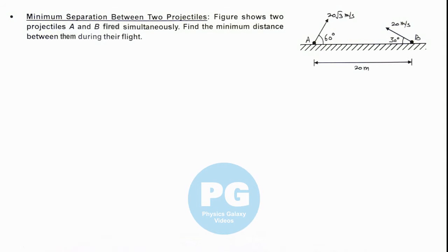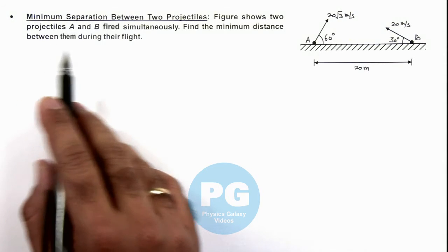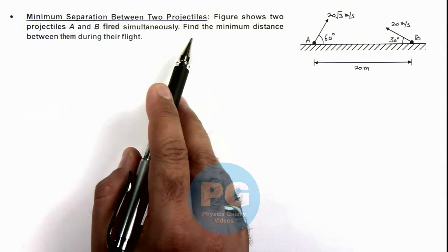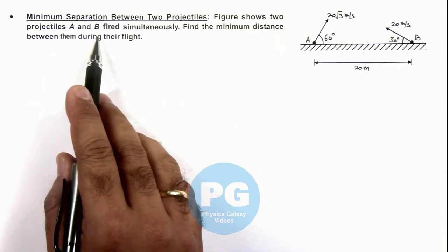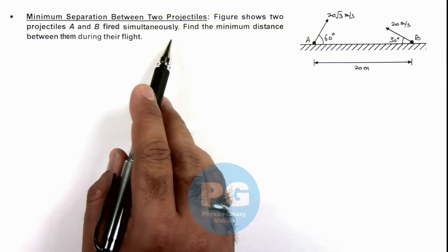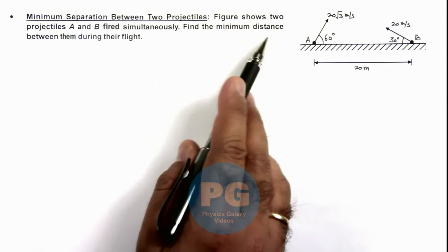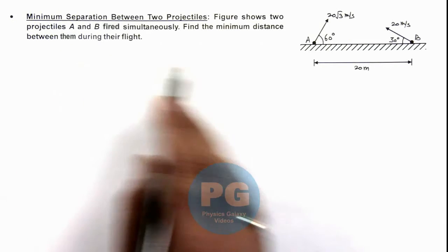In this illustration we'll discuss the minimum separation between two projectiles. The figure shows two projectiles A and B fired simultaneously. We are required to find the minimum distance between them during their flight.